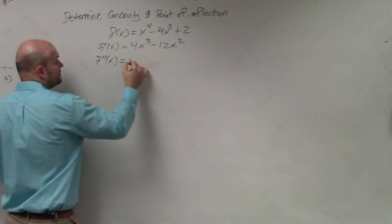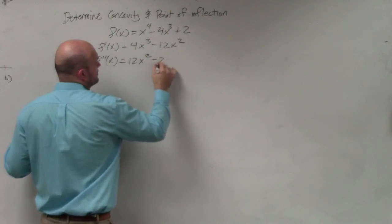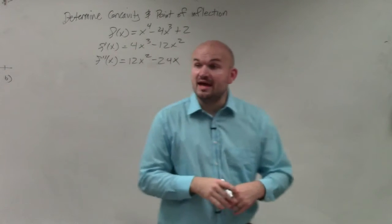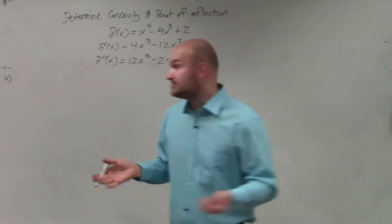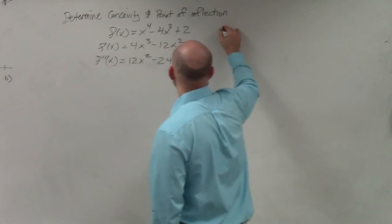Let's take the second derivative. Then we need to identify our possible points of inflection. So we set our second derivative equal to 0.